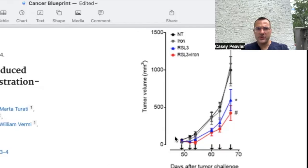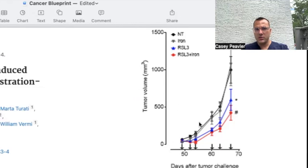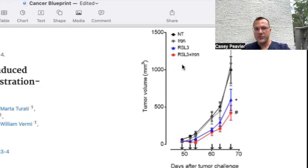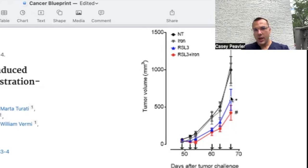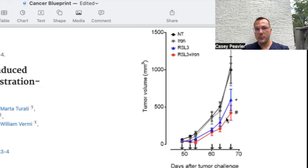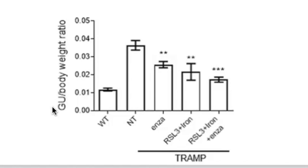Looking at a couple of graphs showing tumor volume: in the non-treated group there is essentially exponential growth of prostate cancer cells. Adding iron alone makes little difference — it has to be in combination. Adding RSL3 shows a significant drop, and RSL3 plus iron shows an even greater significant drop. Similarly, looking at GU or prostate mass over body weight, the non-treated shows the highest amount. Androgen deprivation therapy and RSL3 plus iron each reduce this, and combining all three together shows the biggest effect in this prostate cancer model.